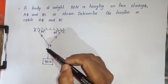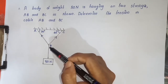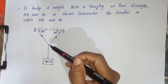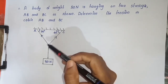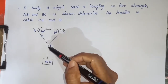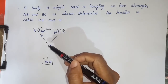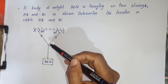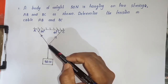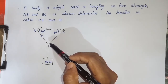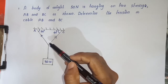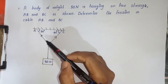We need to find TAB and TBC. We are going to apply Lami's theorem: A by sin A equals B by sin B equals C by sin C. That covers all the forces and their magnitudes.